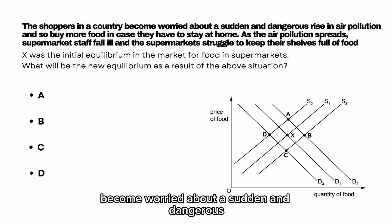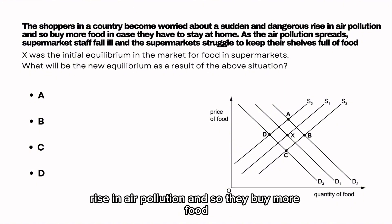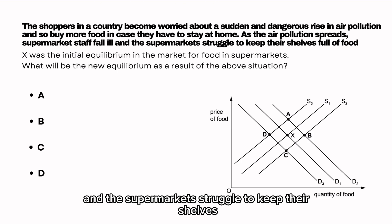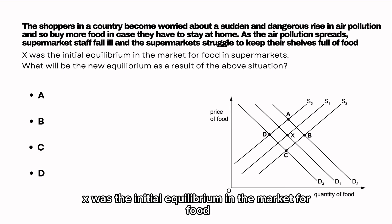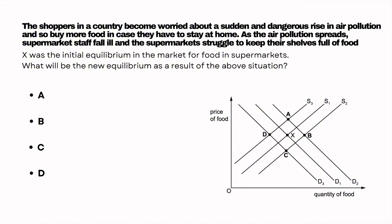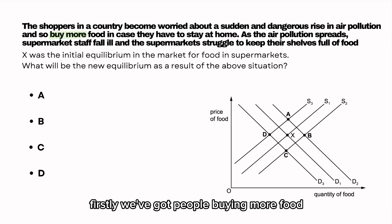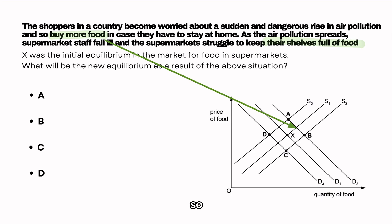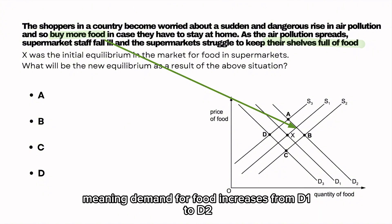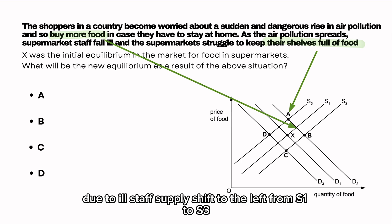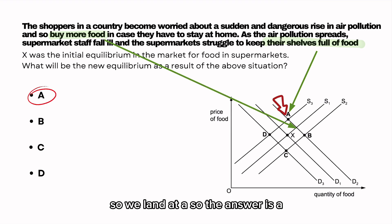Shoppers become worried about a sudden and dangerous rise in air pollution and buy more food in case they have to stay at home. As the air pollution spreads, supermarket staff fall ill and supermarkets struggle to keep their shelves full. X was the initial equilibrium. We've got two things going on: people buying more food and supermarket staff falling ill. Demand for food increases from D1 to D2, but supply shifts left from S1 to S3. So the answer is A.